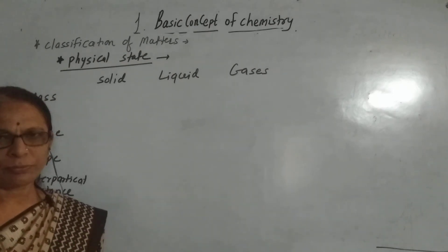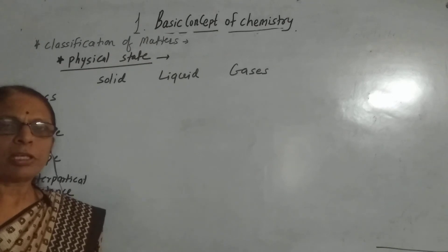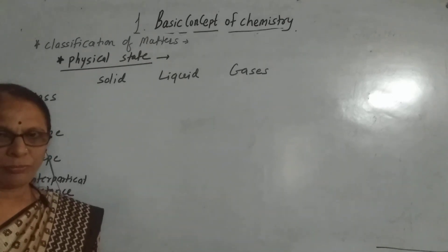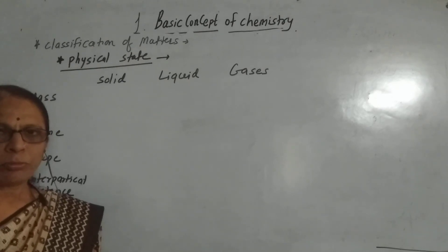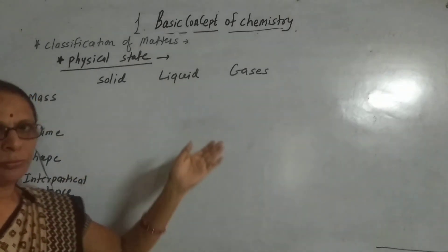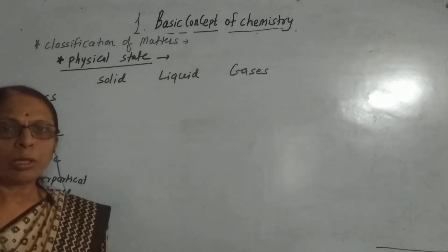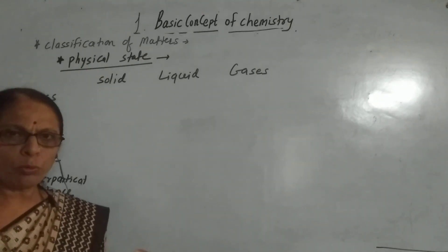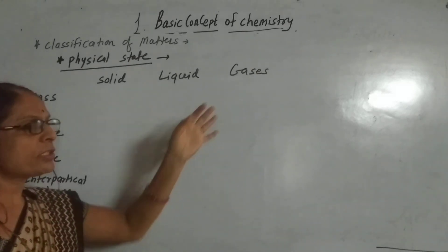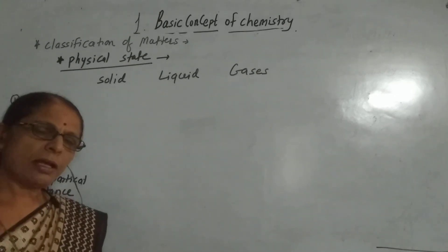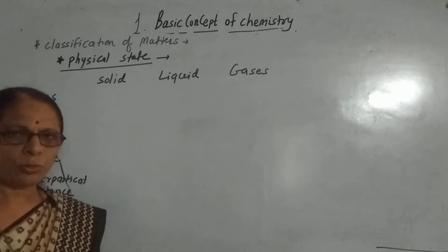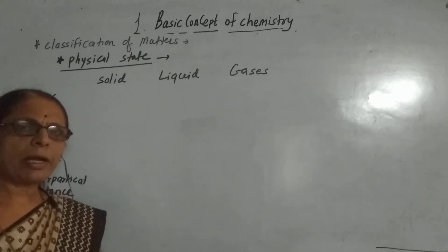When you consider liquids, we observe that liquids are mobile to a certain extent. They have definite mass, but they have movement — they can move to a certain extent. And when you consider gases, gases are random in nature. They also have definite mass, but the molecules are random.